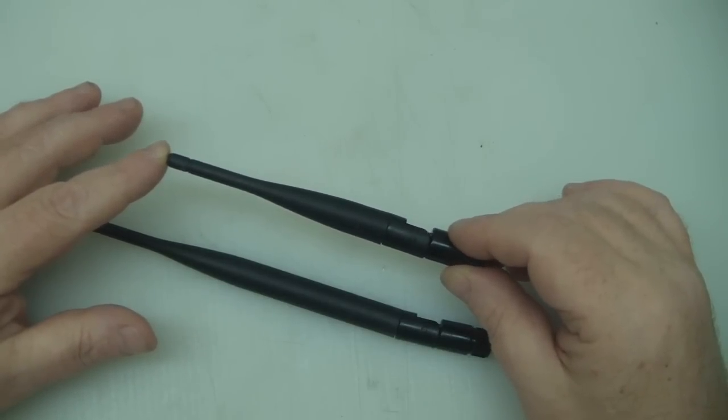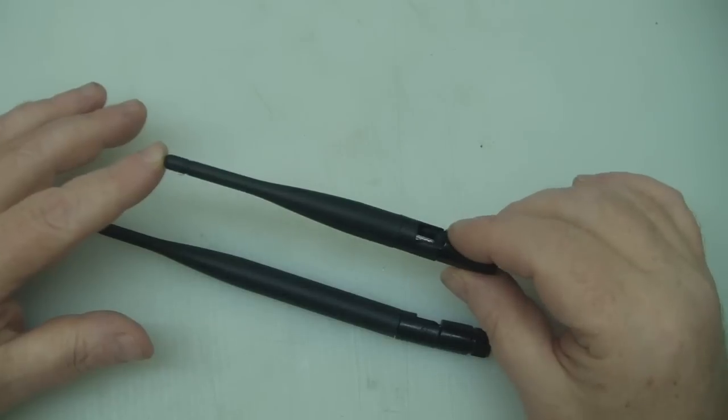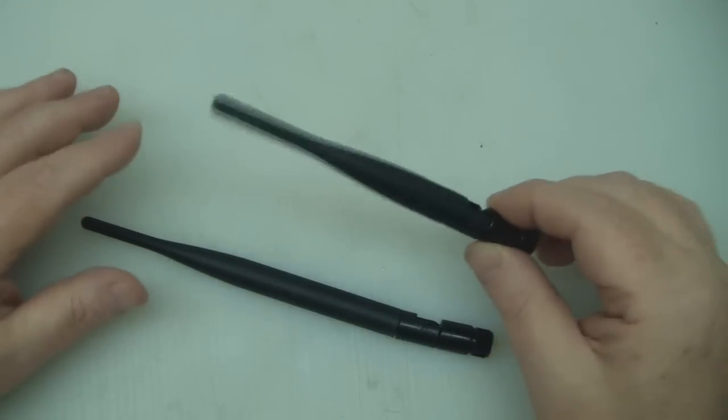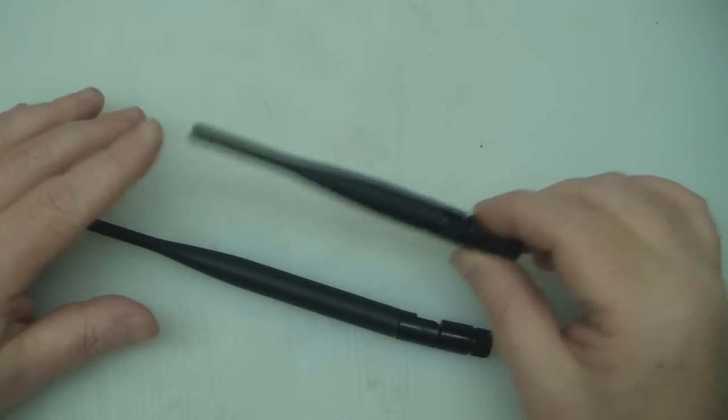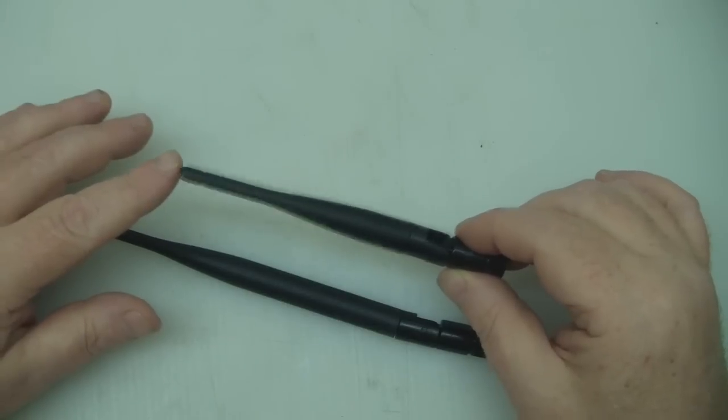And I will link down below the 5 GHz and the 5.8 GHz dipole that I made, so you can get the measurements there as well. Because I know first person view is normally shot at the 5.8 GHz spectrum, and there is a little bit of difference with the measurements.